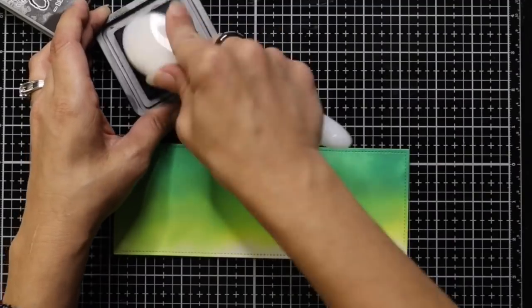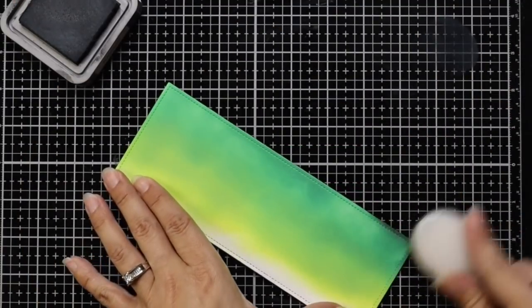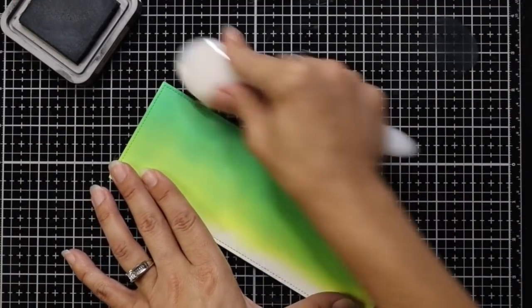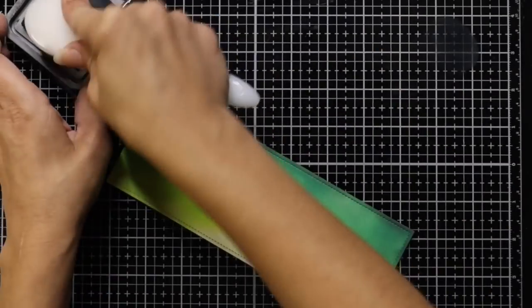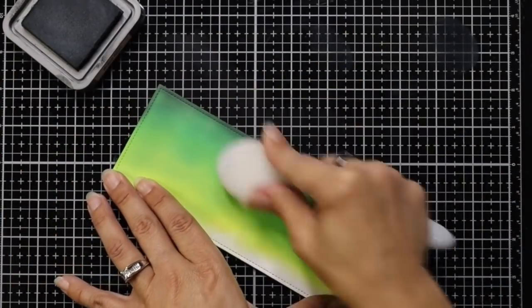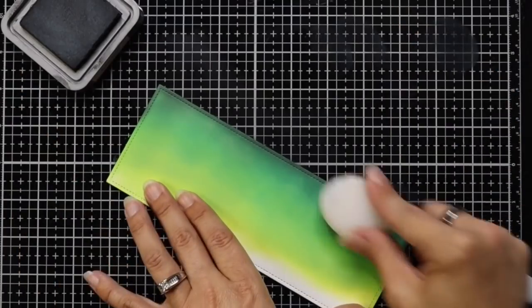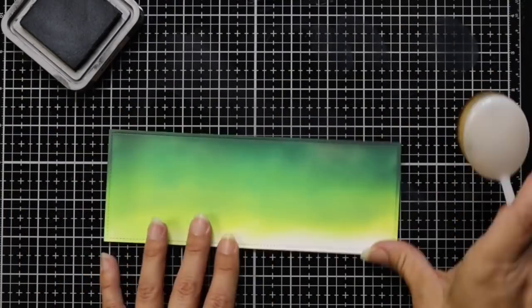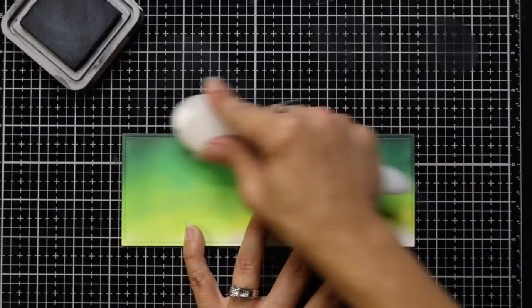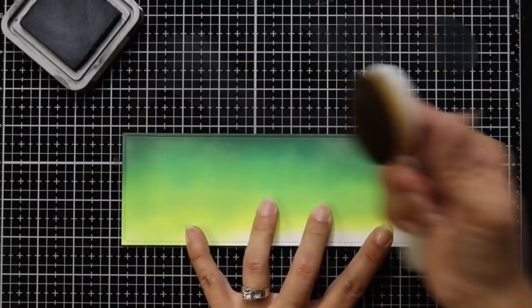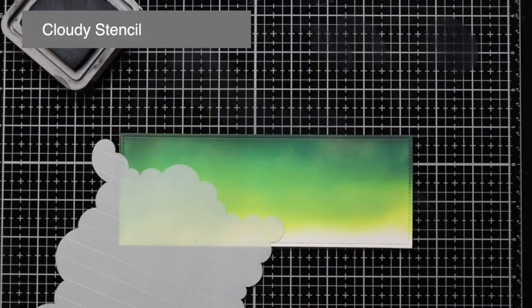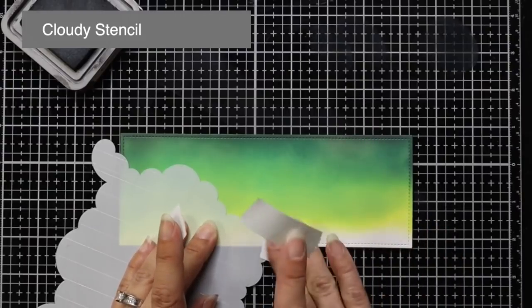Now I'm going to top this off with the Black Soot Distress Oxide ink, starting from the top, working down just a little bit. If you wanted it to be a little more drastic, you could add Blueprint Sketch or bring in the Black Soot Distress Ink. The Oxide has a little more chalky feel to it, so it isn't as black.